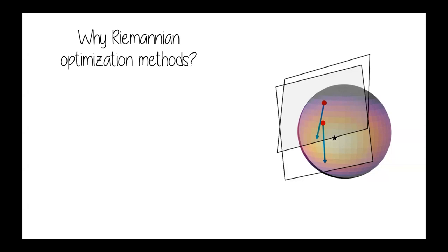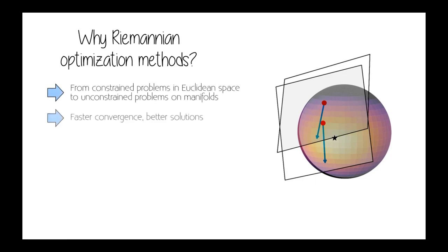You could use Euclidean methods, but then you have to constrain your optimization on the sphere. If we use a Riemannian method, we take into account the intrinsic geometry of the manifold, so in general we get faster convergence and better solutions — a better optimization of our variable.